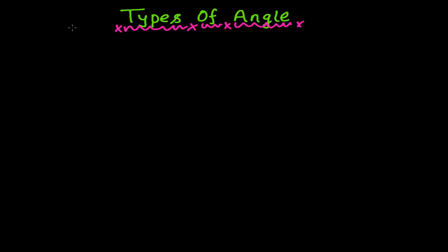Hello brothers and sisters. In this video we're going to learn the types of angles. In previous videos we learned what an angle is, all the concepts of angle, the measurement of angle, how we measure angles in degrees and radians, and about the protractor. Now we're ready to learn the types of angles. An angle is simply when two lines intersect and the corner formed is called the angle.